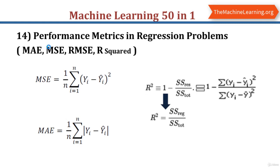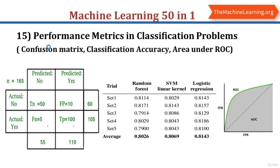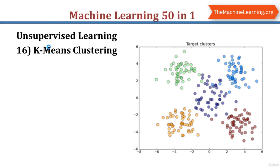The next topic is performance metrics. Performance metrics are very important for evaluating our model. Performance metrics used in regression problems are mean absolute error, mean square error, root mean square error, and R-squared. Performance metrics used in classification problems are confusion matrix, classification accuracy, and area under the ROC curve. K-means clustering is one of the simplest and most popular unsupervised machine learning algorithms — it looks for a fixed number K of clusters in a dataset, where a cluster refers to a collection of data points.